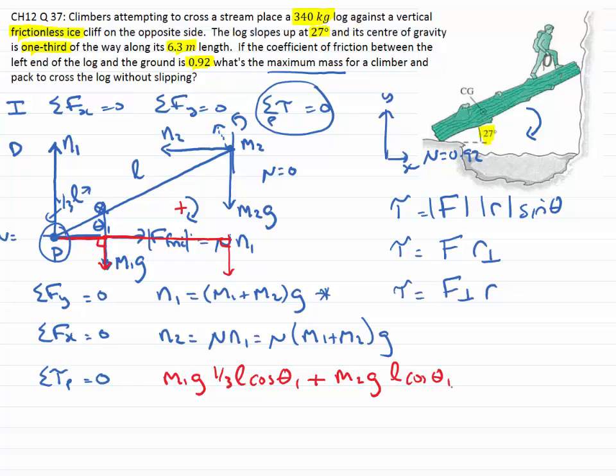Finally, we need the torque provided by the normal force of the ice wall. We want the perpendicular component of the force times the distance. It's negative because counterclockwise is negative. That distance is L. Using trigonometry, theta 1 here is the same as this angle, so that component is N2 times sine of theta 1. The sum of those torques must be zero.